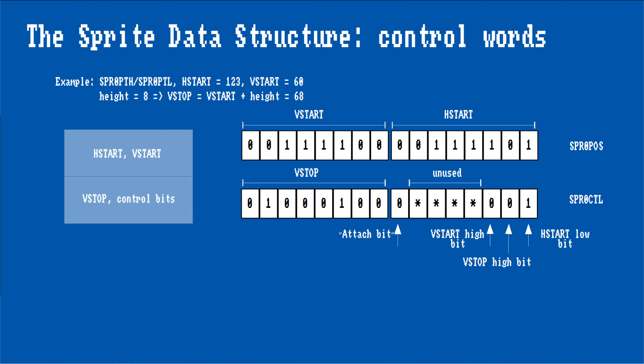Here are the two initial words of the sprite data structure shown up close. As I mentioned, they each correspond to a sprite DMA channel's position and control registers. In this example, we assume sprite zero's data pointer is pointing at our structure. Most of the bits in these two words are used to specify a sprite's position and height, and there is one bit to specify attached sprites, which we will look at later.